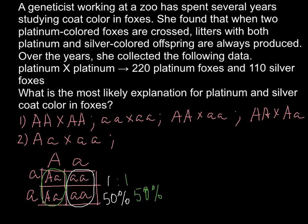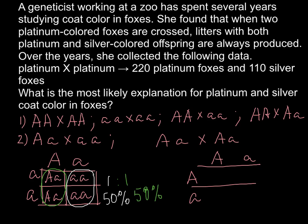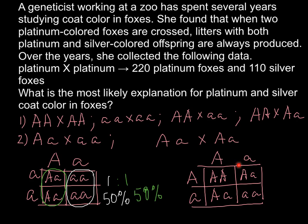Another example would be when we cross a heterozygous genotype with a heterozygous genotype. Let me build a Punnett square once again. As a result of such a cross we can get homozygous dominant, heterozygous, and homozygous recessive. The homozygous dominant and heterozygous belong to one phenotype group — dominant. So this is going to be a 3 to 1 ratio.